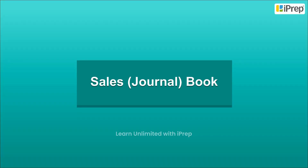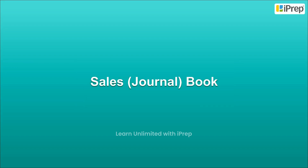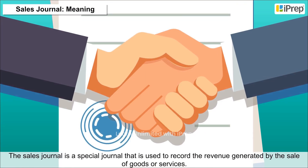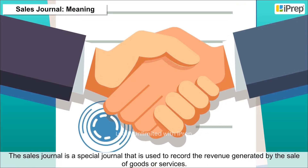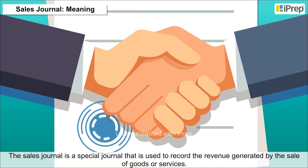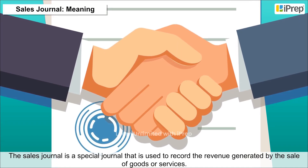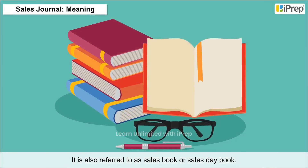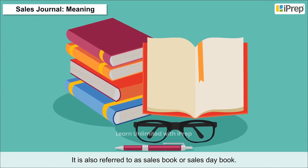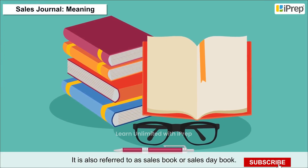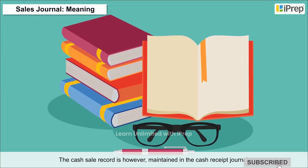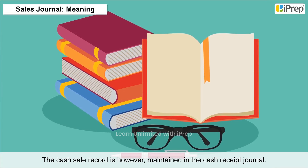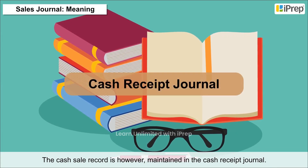Sales Journal Book. The Sales Journal is a special journal used to record the revenue generated by the sales of goods or services. It is also referred to as Sales Book or Sales Day Book. The cash sale record is however maintained in the Cash Receipt Journal.